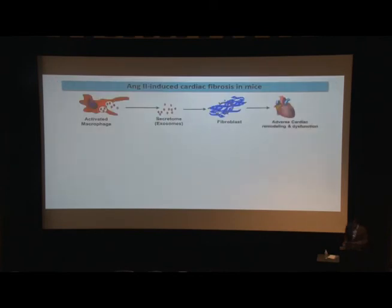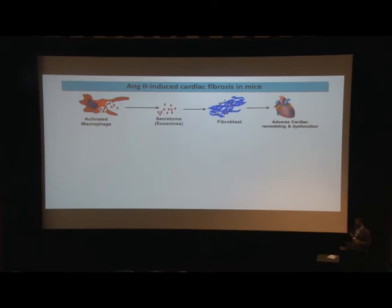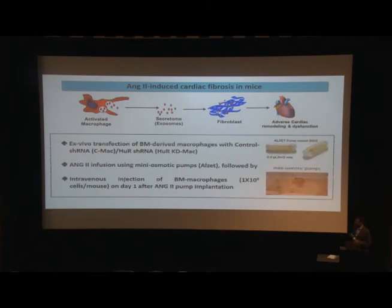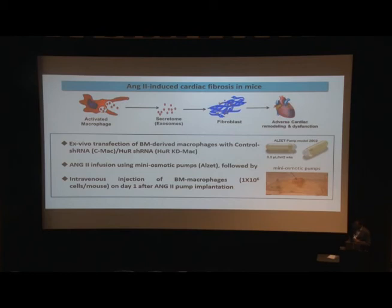To study biological relevance in vivo, we used an angiotensin-induced cardiac fibrosis model. We transfected bone marrow-derived macrophages with control or HUR shRNA lentivirus-based knockdown, infused angiotensin for two weeks using mini-osmotic pumps, and at day one intravenously injected these bone marrow macrophages — either HUR-deficient or control shRNA-treated cells.